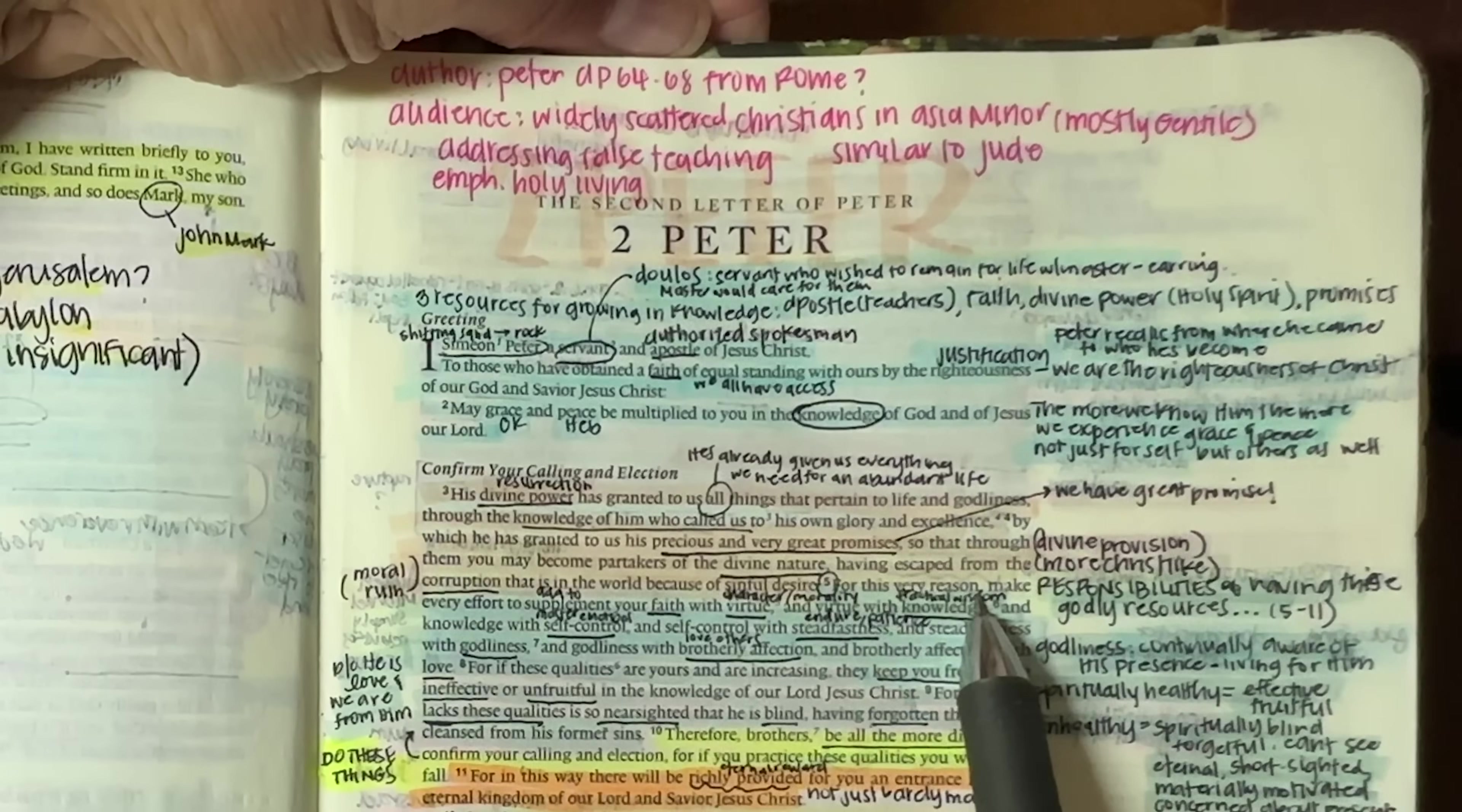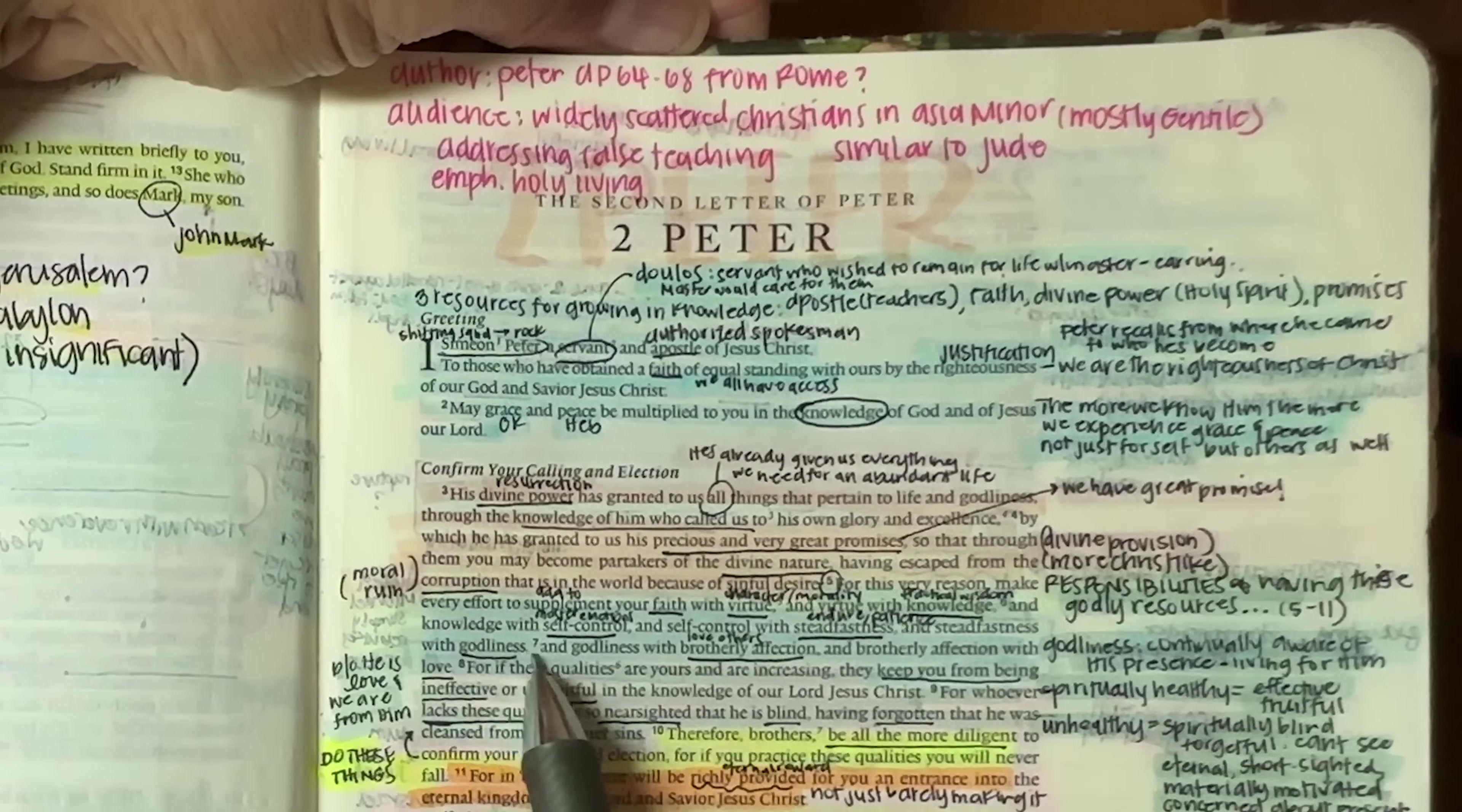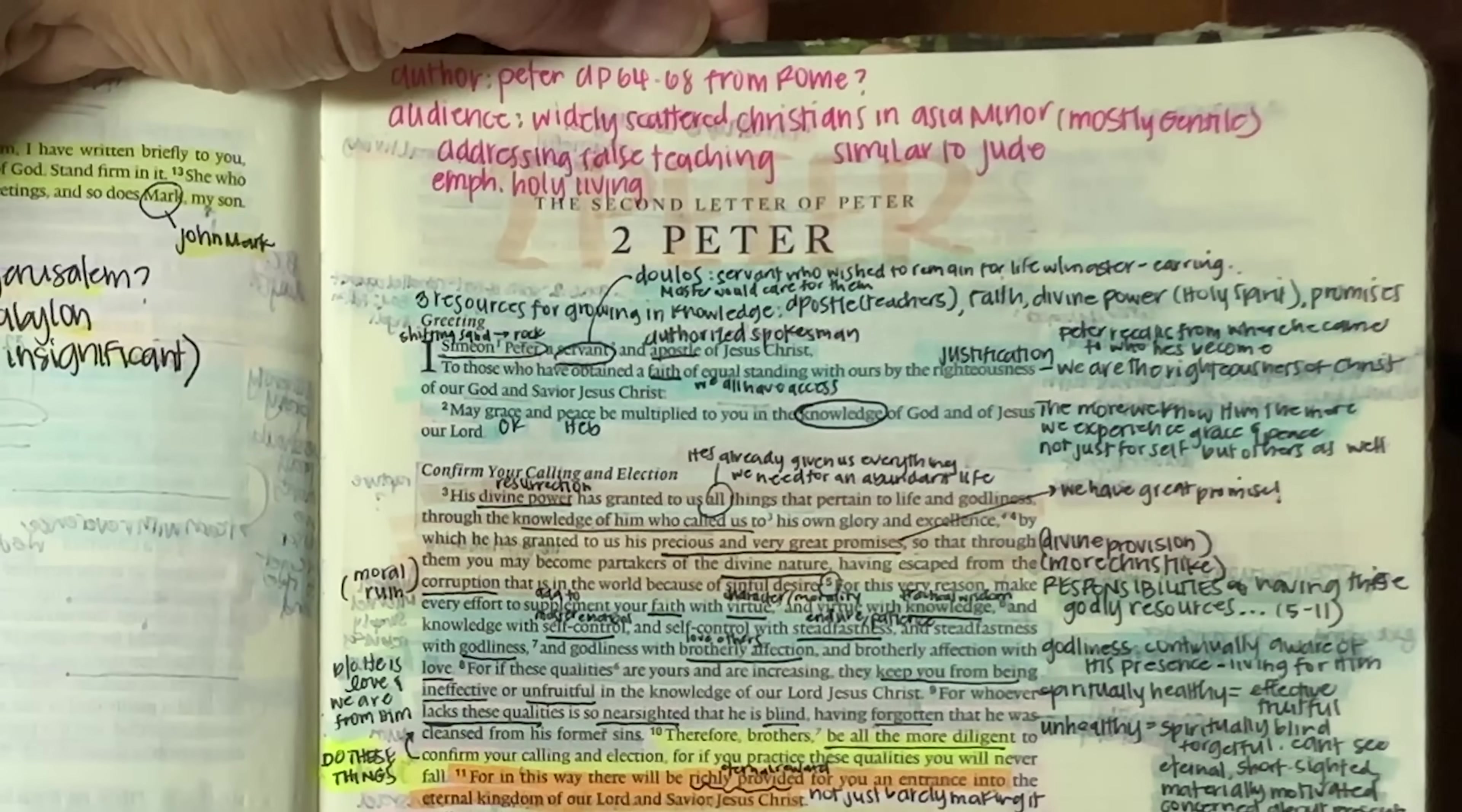For this very reason, make every effort to supplement your faith, meaning to add to your faith with virtue. So virtue being your morality or your godly character, and then add virtue with knowledge, meaning that practical wisdom that we learn from the word, and with knowledge with self-control. Self-control being the ability to master your own emotions and to be able to master your flesh. And self-control with steadfastness. Steadfastness being that endurance or that patience. And steadfastness with love. Of course, love encompassing all things.